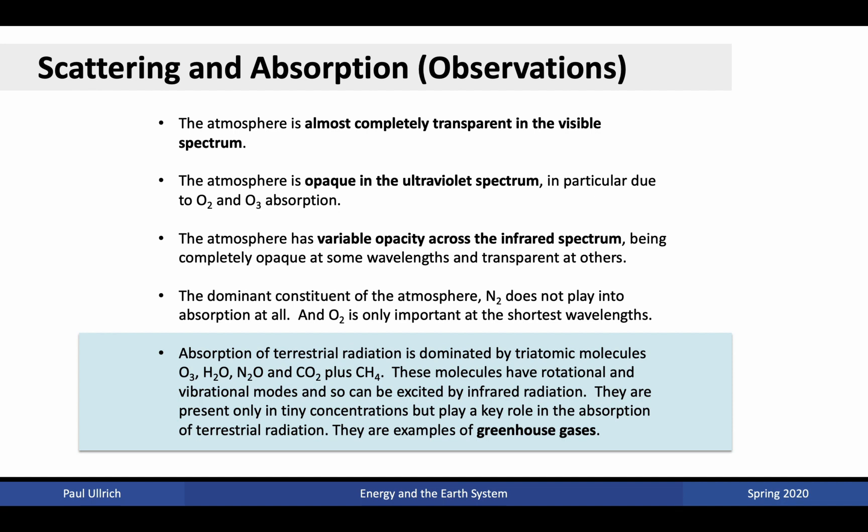From this, we observe that the atmosphere is almost completely transparent in the visible part of the spectrum, opaque in the ultraviolet due to oxygen and ozone absorption, and has variable opacity across the infrared spectrum — completely opaque at some wavelengths and transparent at others — because of the chemical constituents of the atmosphere, particularly greenhouse gases. The dominant constituent nitrogen does not really play into absorption at all, and oxygen is only important at the shortest wavelengths.